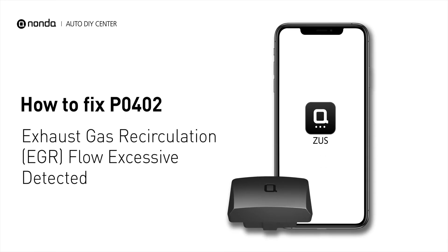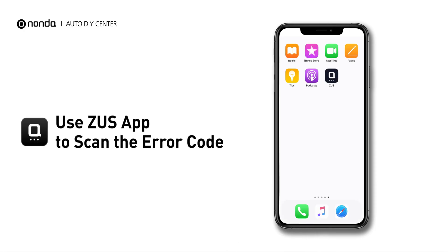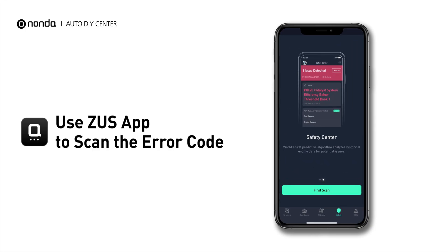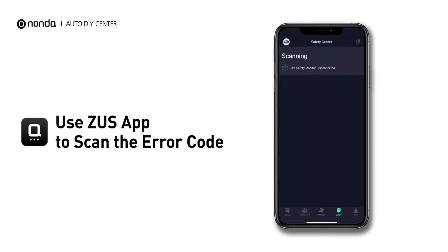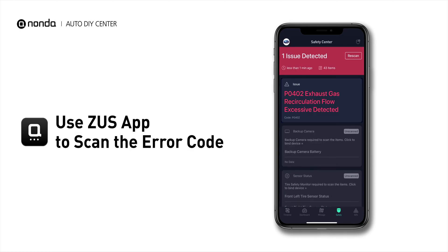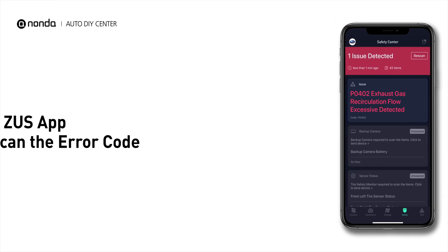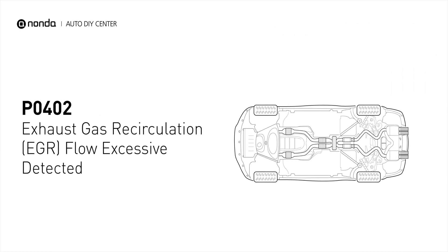If you are getting a PO402 error code, this video is going to show you two practical solutions to fix the error code at home. Use the Zeus app to scan your vehicle and see the error code PO402. It indicates the EGR valve is flowing too much recirculated exhaust gases when it is commanded to open the flow of gases into the intake manifold.